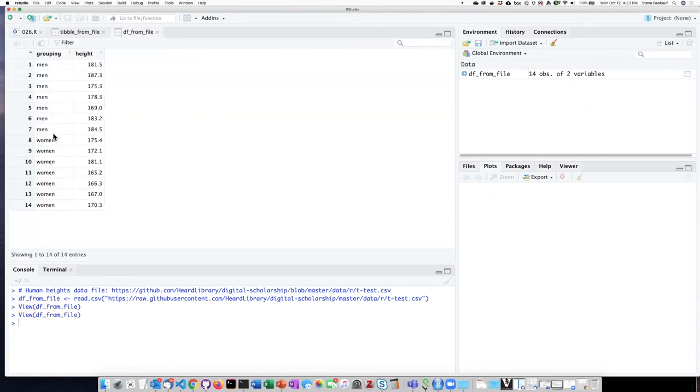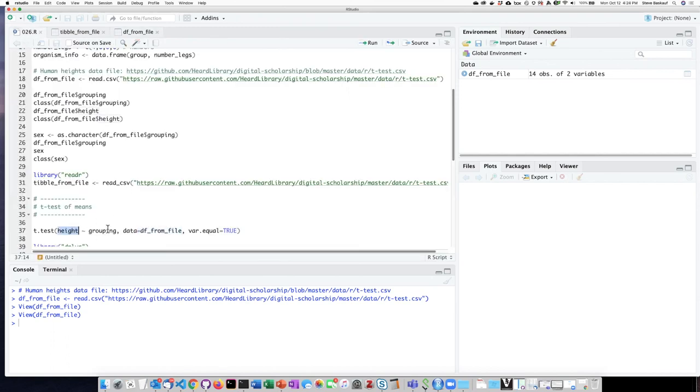The independent variable, which is our factor, comes second. The dependent variable, which is our numbers, comes first. So here's the dependent variable. Here's the independent variable.